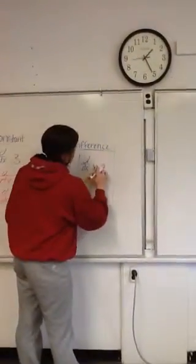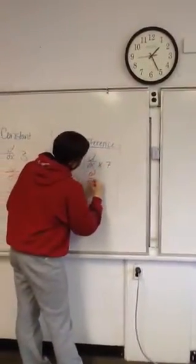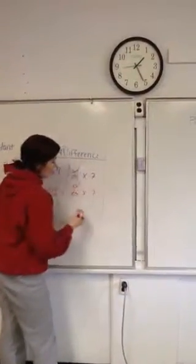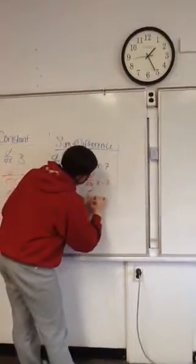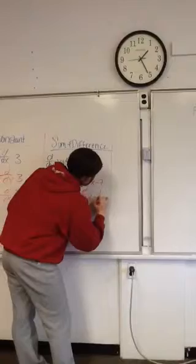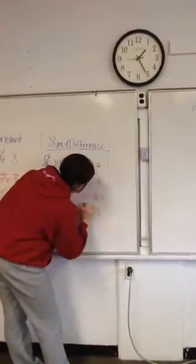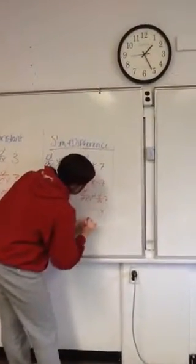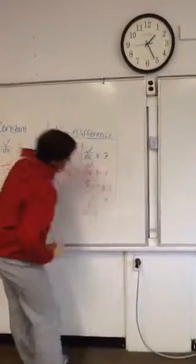Same over here. So d/dx of x minus 7. All you do is break it up. d/dx of x minus d/dx of 7. That's 0, this is still 1. So 1 minus 0 equals 1. The derivative equals 1.